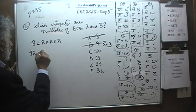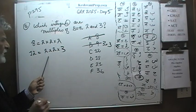12. 12 is 2 times 2 times 3. There you go. There is a multiple of both 2 and 3.